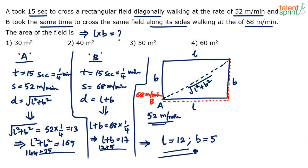He is asking us to find the area. Area is L times B: 12 times 5 is 60. So 60 meters squared is the final answer. It doesn't take as much time as the explanation suggests — you will get 60 as the final answer.